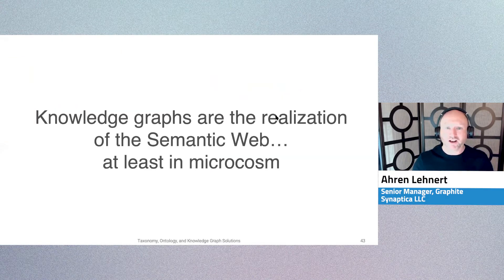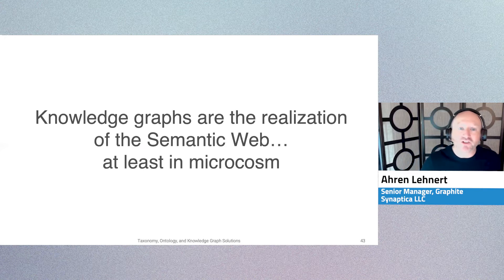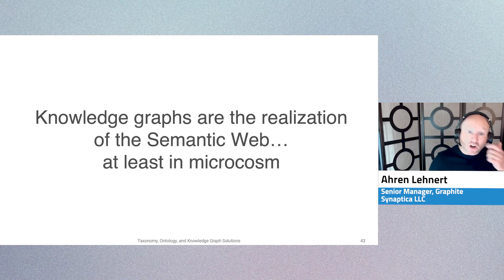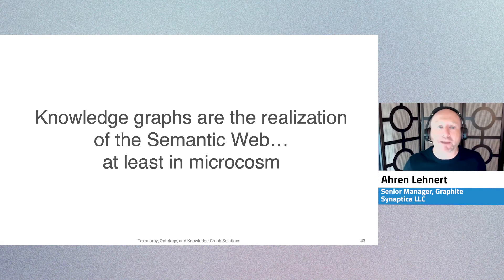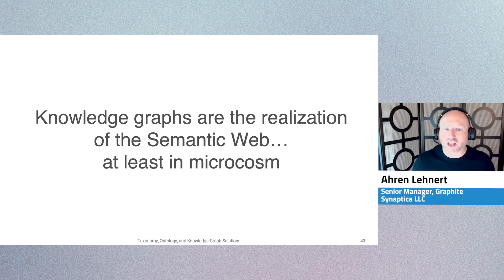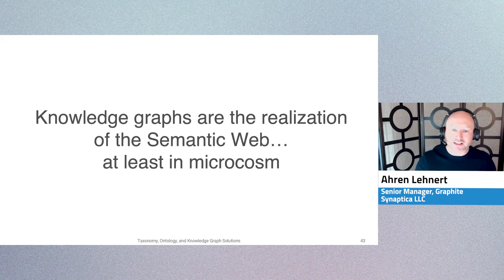This is my quote, my estimation: Knowledge Graphs are the realization of the Semantic Web, at least in microcosm. They are non-hierarchical, decentralized, they're rhizomatic. Remember what we said at the beginning? The Semantic Web is about two things: common formats for integration and combining data, and the language for recording how the data is connecting all these servers and databases together.